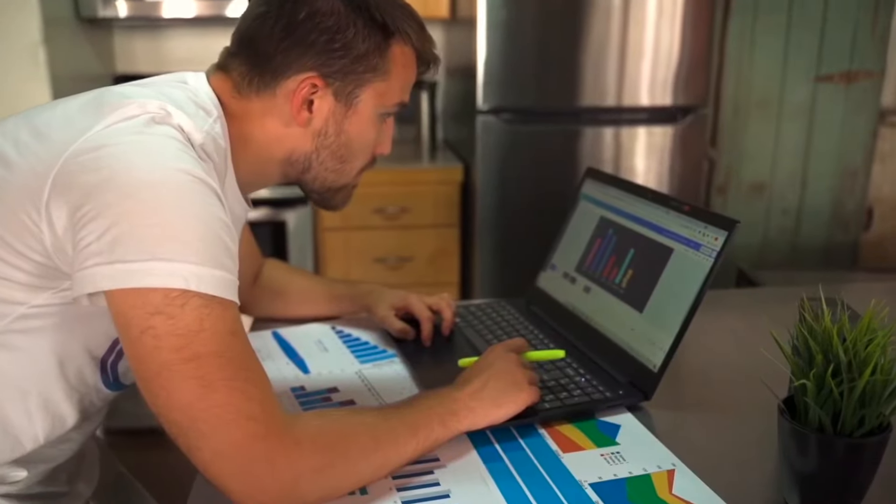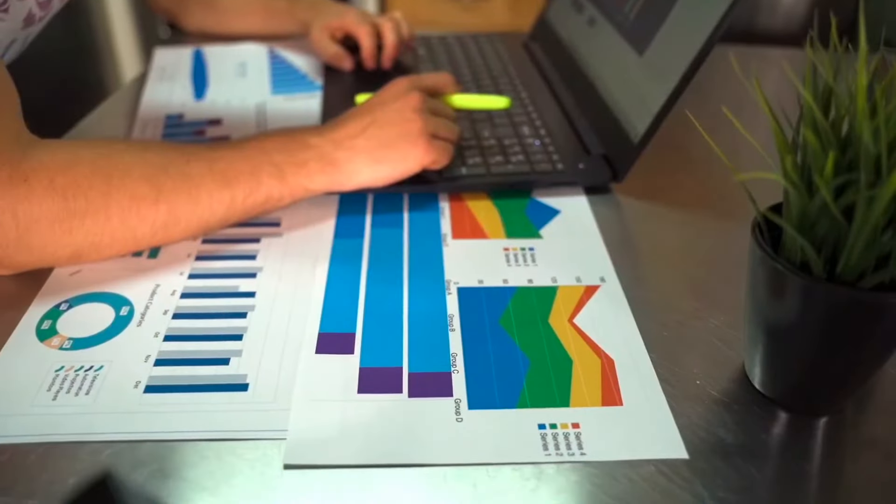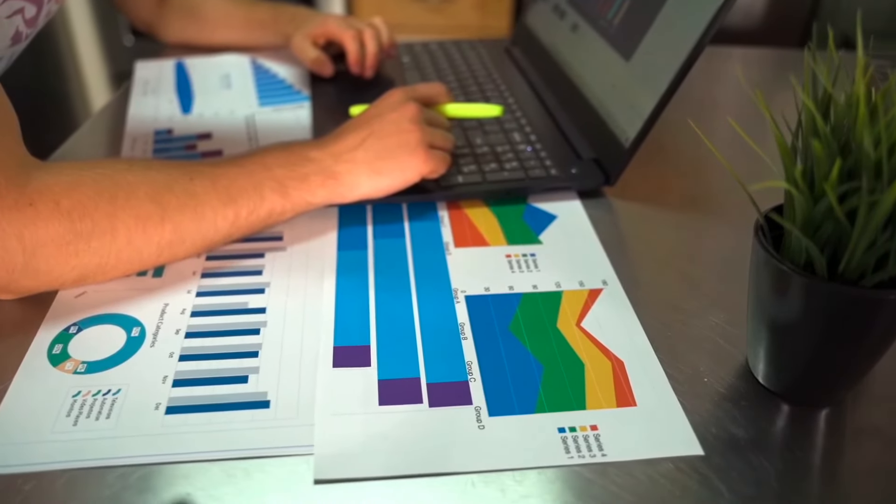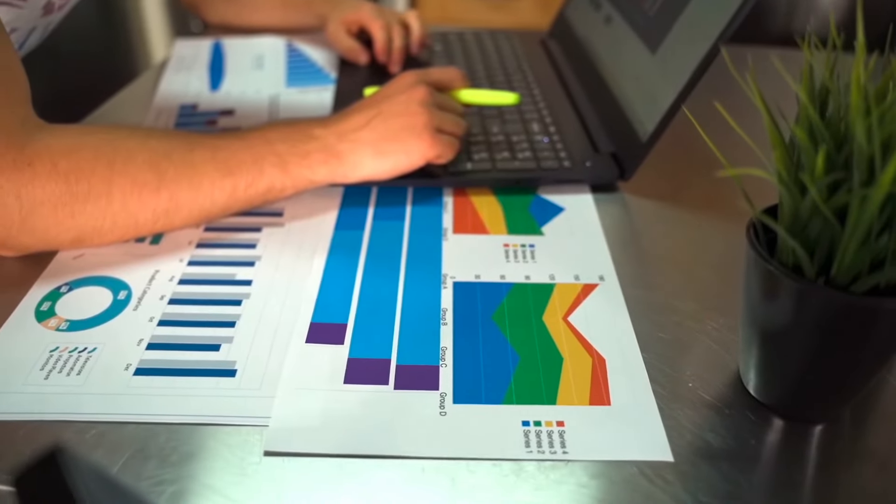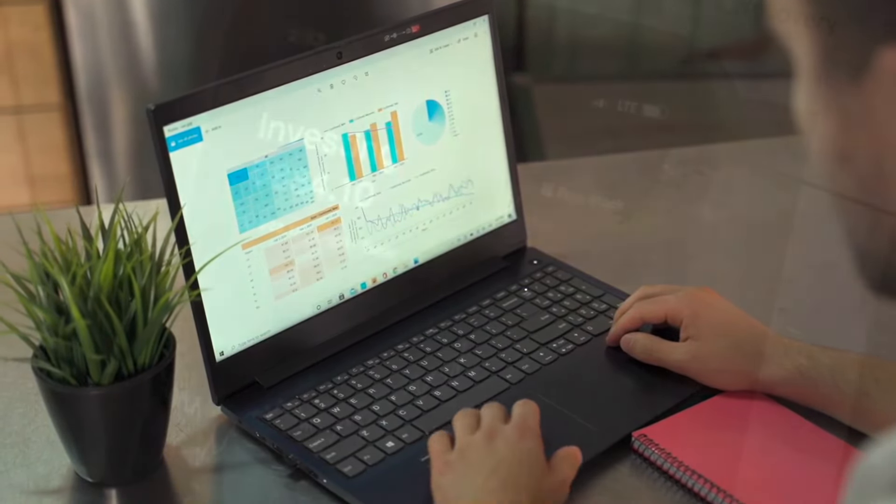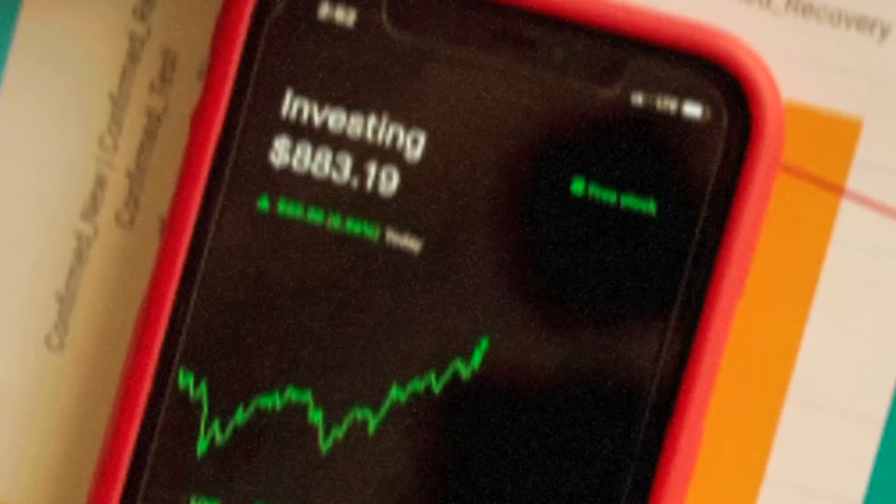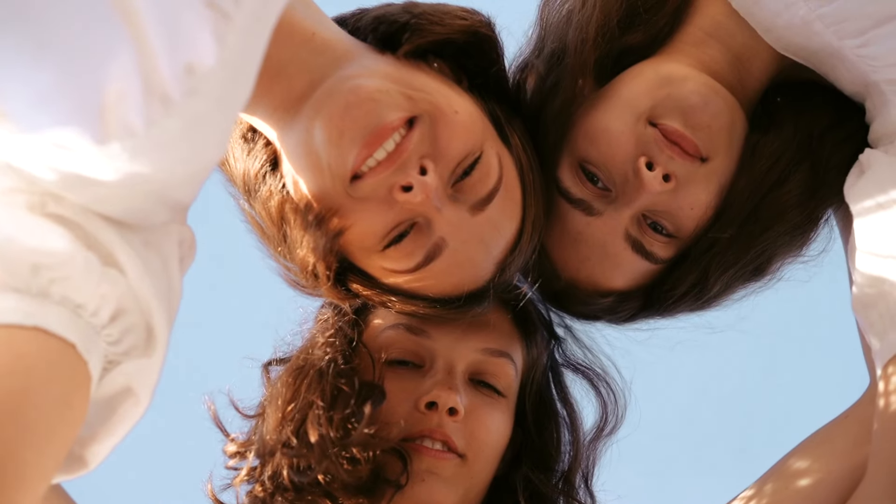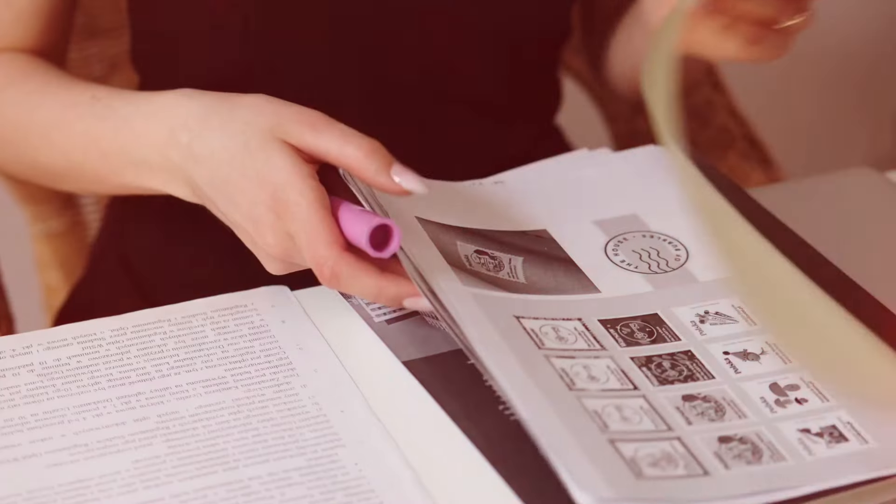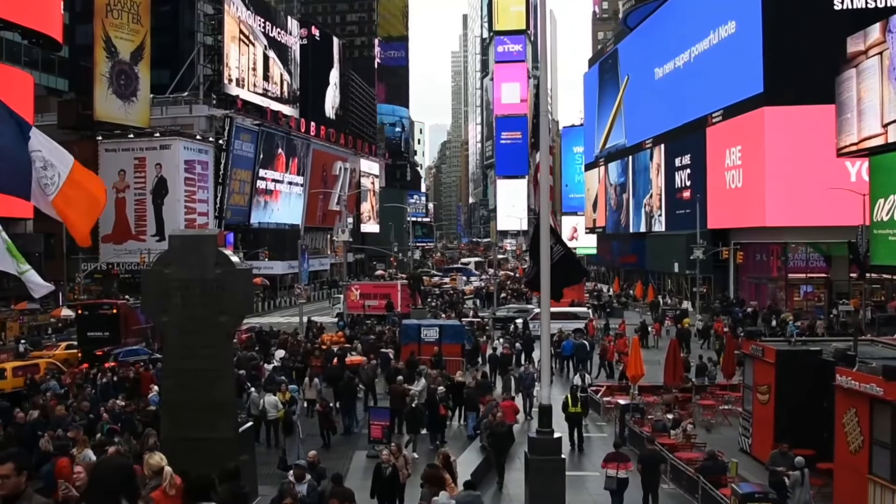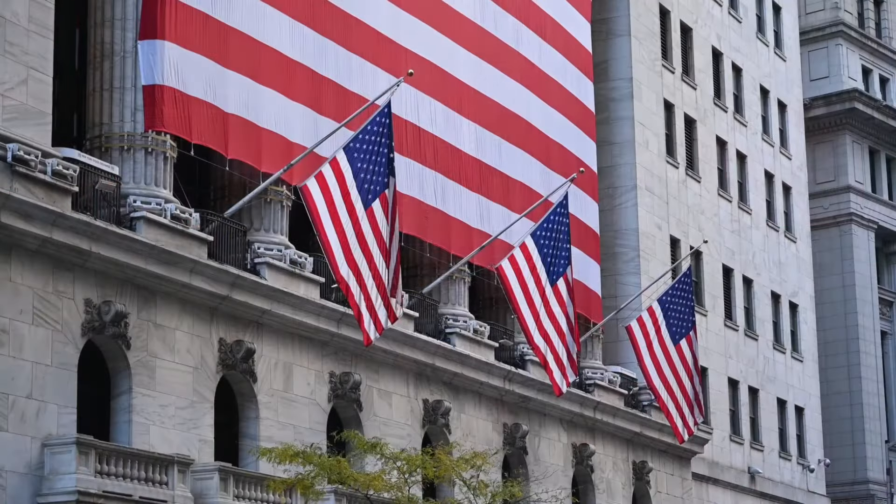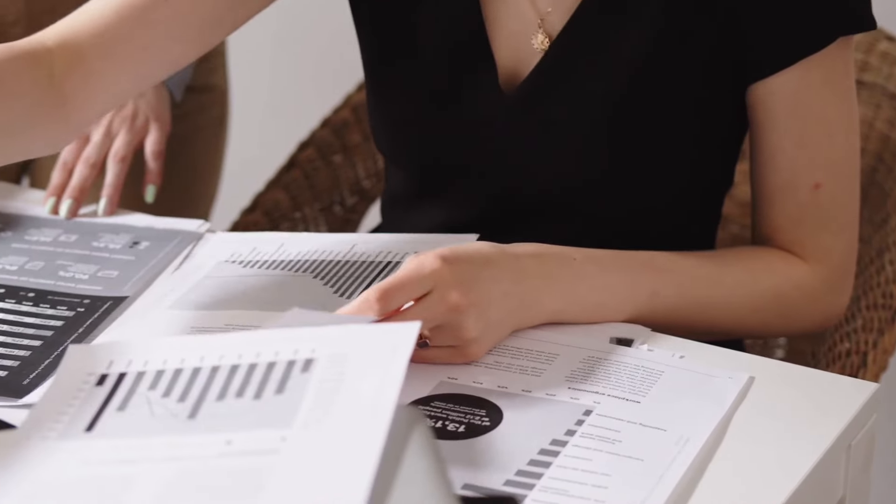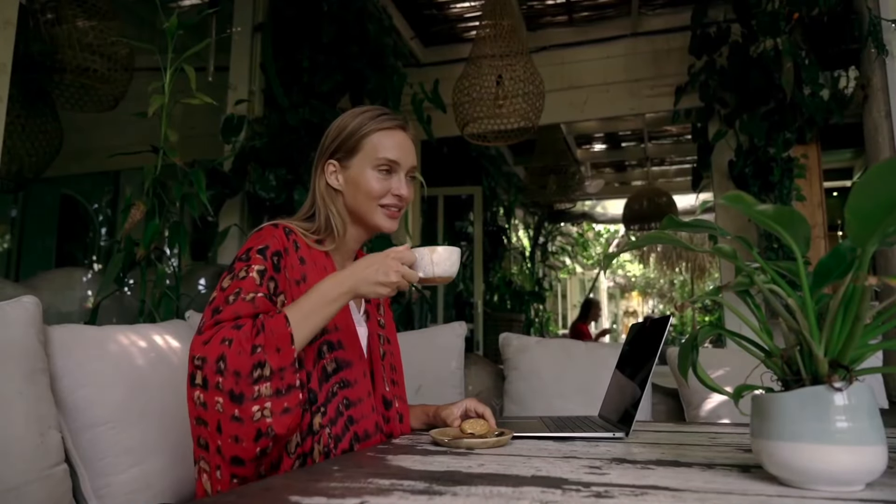I'm not here to rain on Social Security—it's a lifeline for millions of beneficiaries. But it's high time for some serious reforms. We can't keep kicking the can down the road while beneficiaries are struggling to make ends meet. It's time to roll up our sleeves and address the broken system to ensure Social Security fulfills its promise of dignity for all retirees. Let's keep advocating, keep the conversation going, and keep pushing for initiatives to our lawmakers.